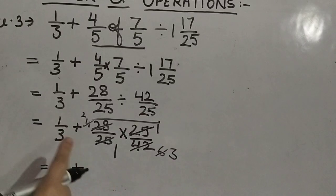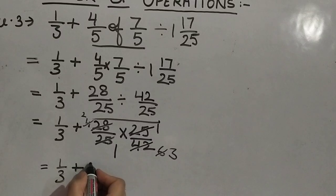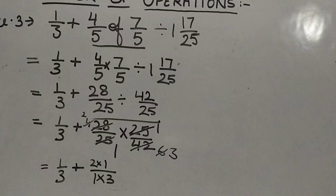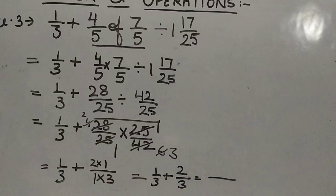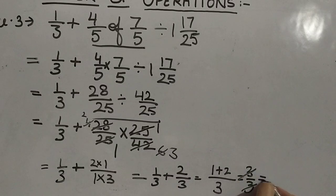Multiplying the remaining terms: 2 × 1 upon 1 × 3 = 2/3. So we have 1/3 + 2/3. The denominators are the same, so: 1 + 2 = 3 upon 3. The 3s cancel and the answer is 1.